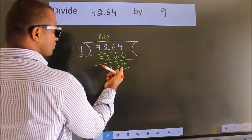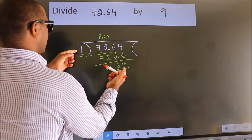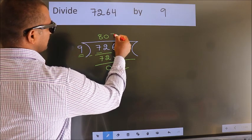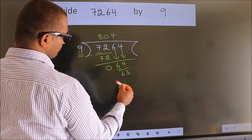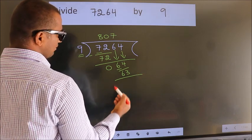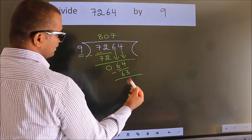A number close to 64 in the 9 table is 9 times 7 equals 63. Now we subtract. We get 1.